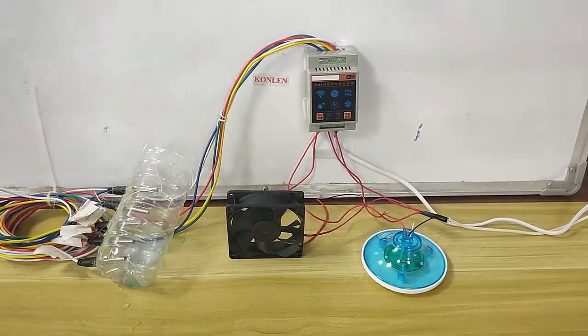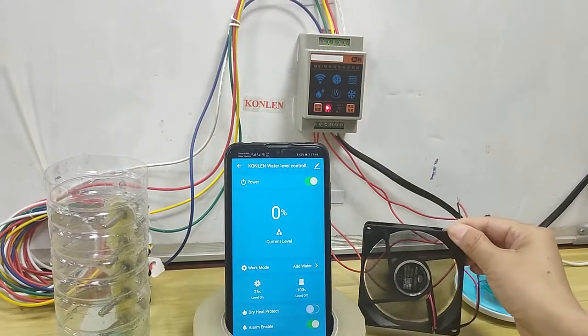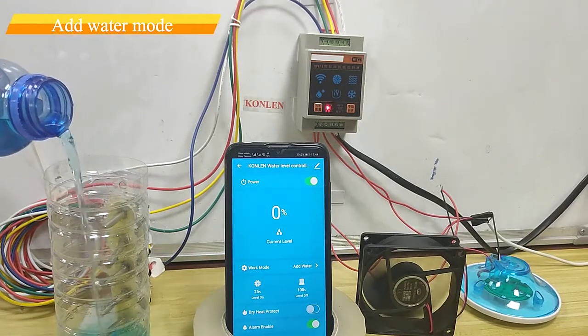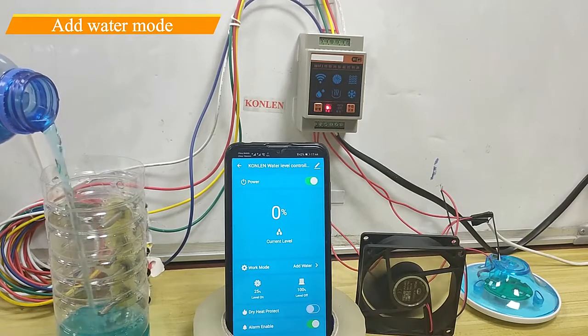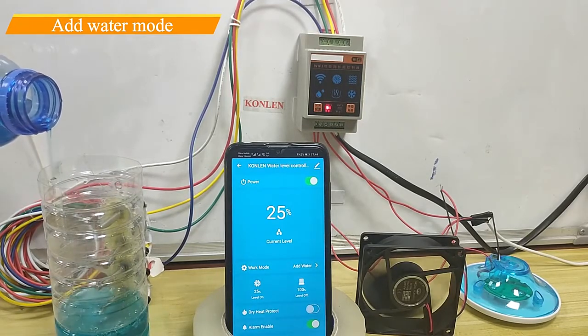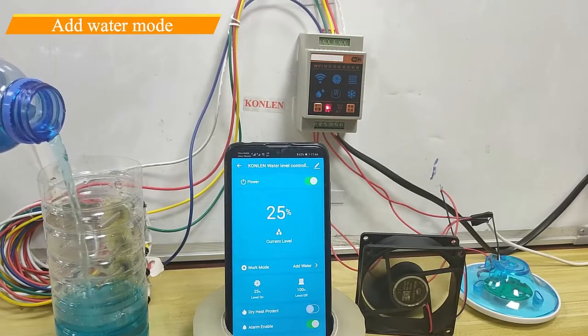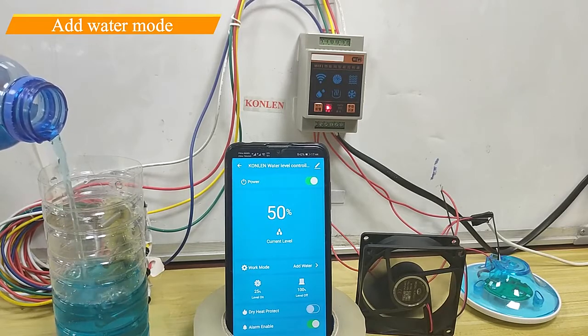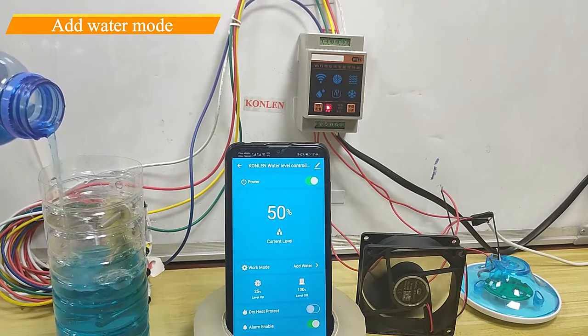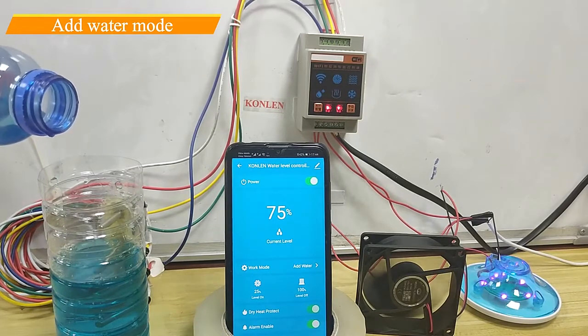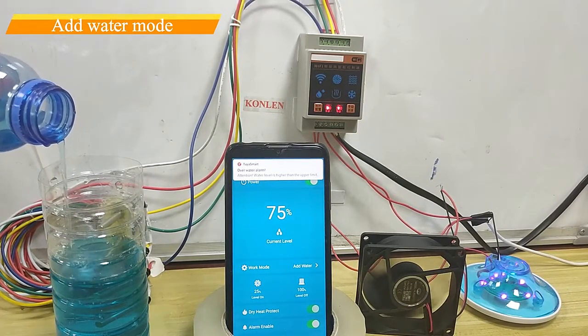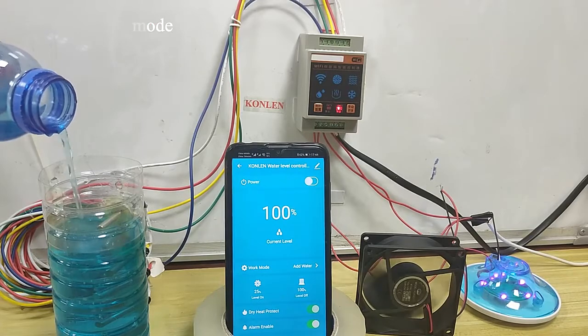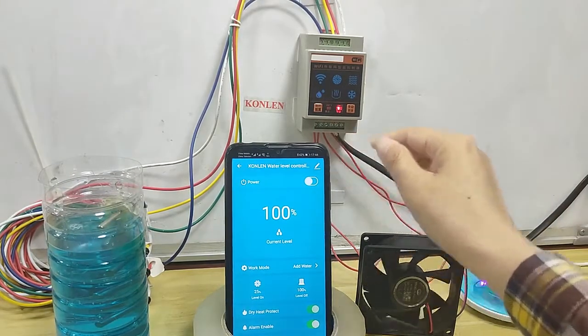Start water pump to add water. Adding water, 25%, 50%. Alarm. Now 100%, app turn off.